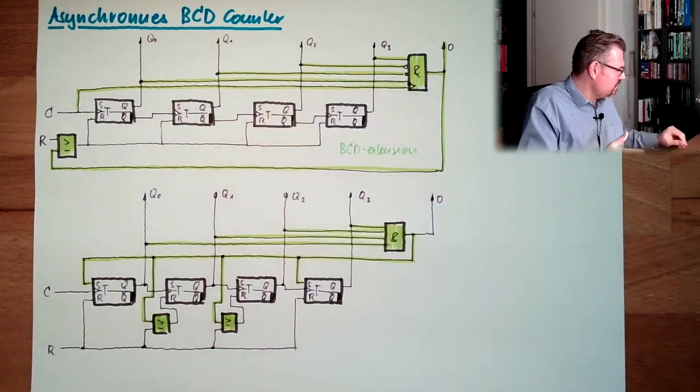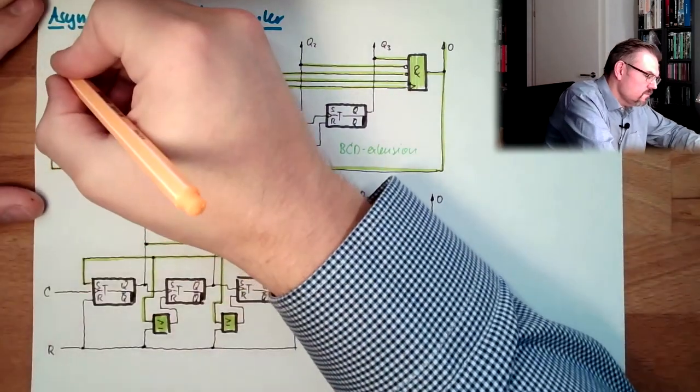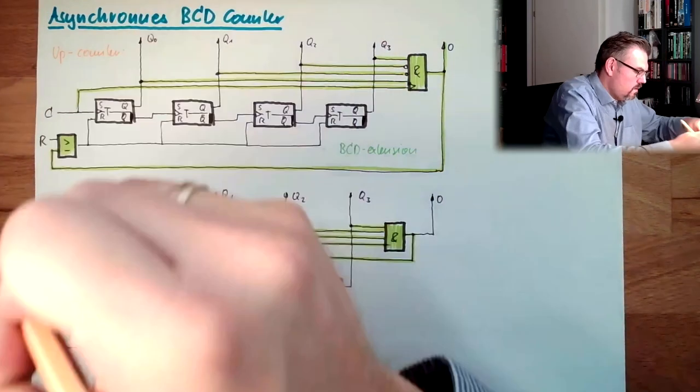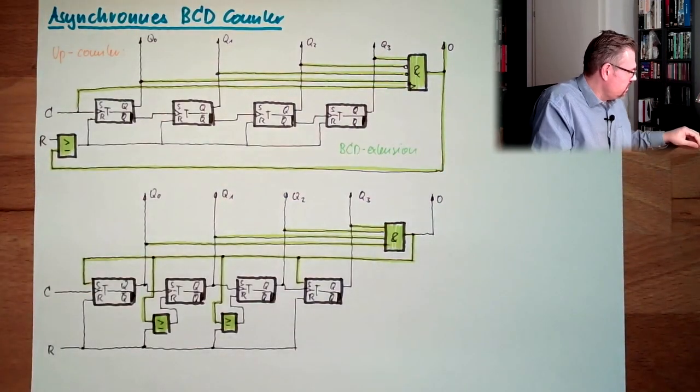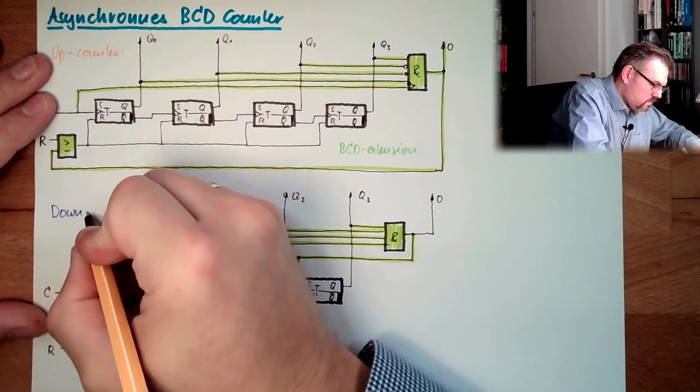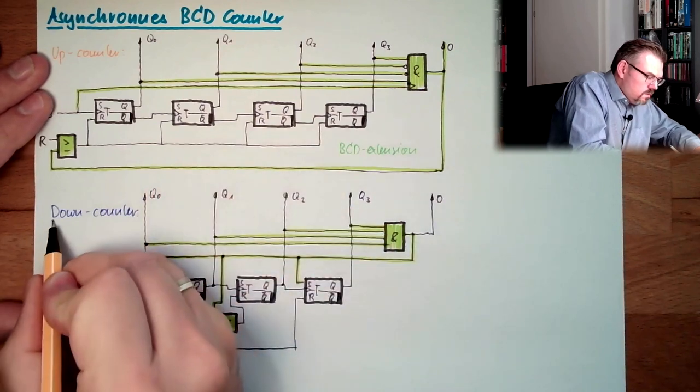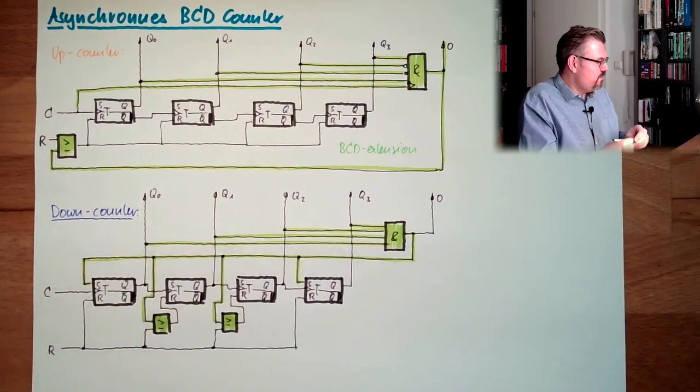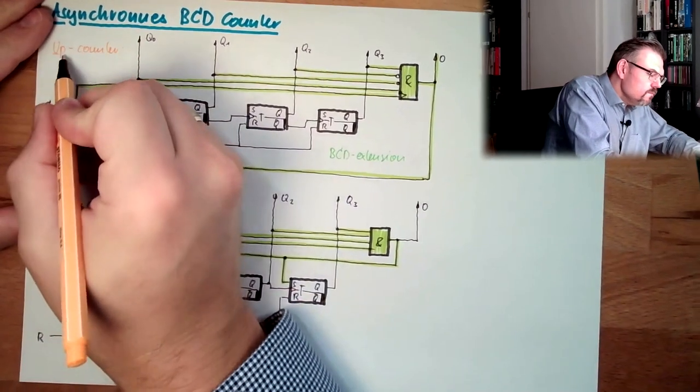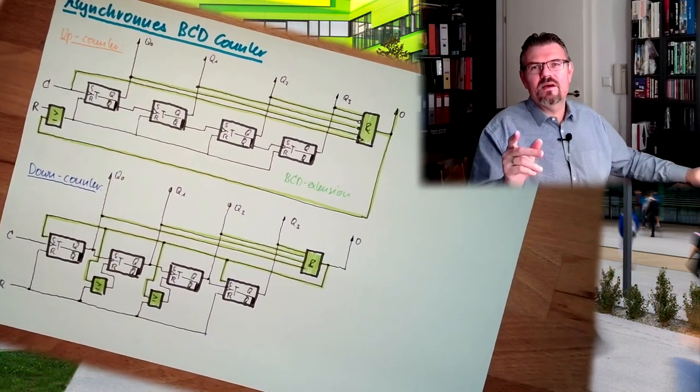So this is upwards counter, maybe I should note it. Up counter. And this here is the down counter. This is how BCD counters work, alright? Asynchronous. Still asynchronous.